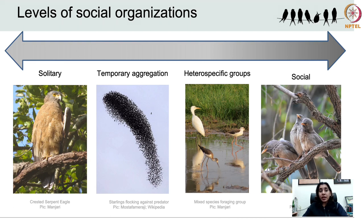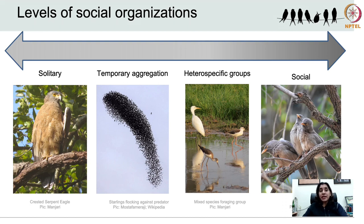Some bird species gather in large numbers for a particular behavioural context, as in the case of starlings flocking against a predator. These temporary aggregations could also occur at a given time of year — for instance, migratory birds that come together for migration — or could be temporary spatial aggregations, as in the case of roosting birds. Sociality has traditionally been examined within a single species, even though many animals including birds can also gather in what is known as mixed species social groups. In birds, these are called mixed species flocks and typically occur in the context of foraging.